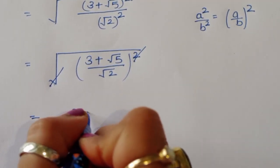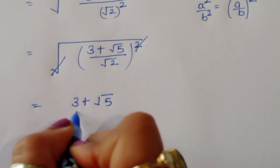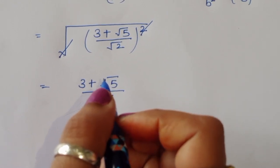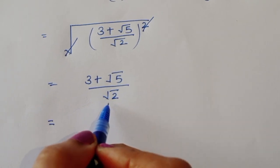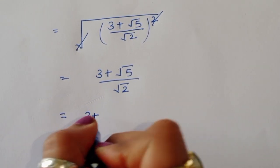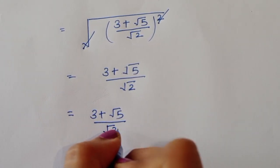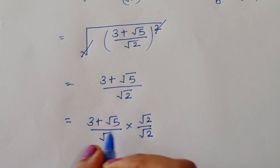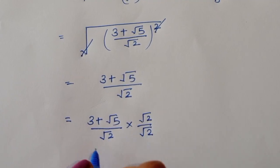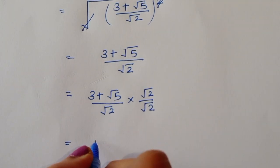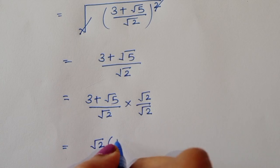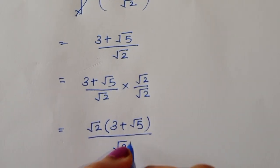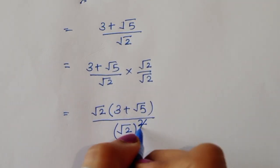We got the value 3 plus square root of 5 divided by square root of 2. Now we rationalize: multiply numerator and denominator by square root of 2. Square root of 2 times square root of 2 equals 2, so the denominator becomes 2.